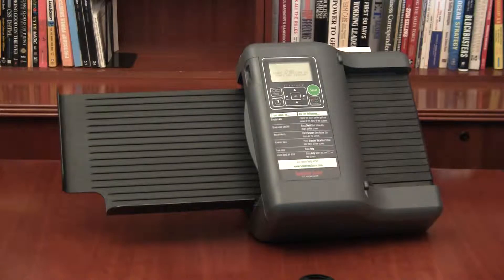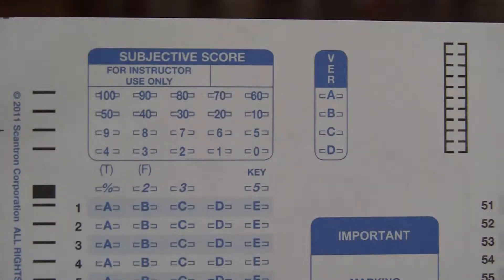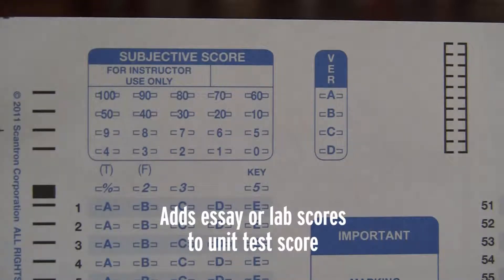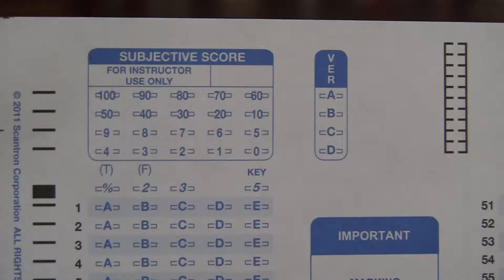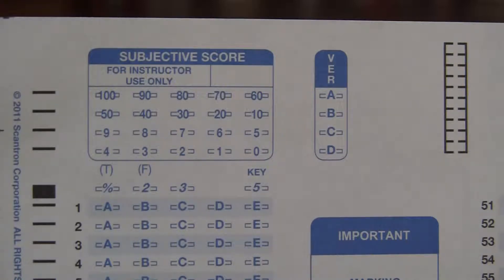In this video, we'll show you how to create a key that uses the subjective scoring area. Many Scantron forms feature a subjective scoring area. It's often used to add essay or lab scores to a unit test score. See the online interactive user's guide at scantronscore.com for more ideas on how to use subjective scoring to expand your tests.